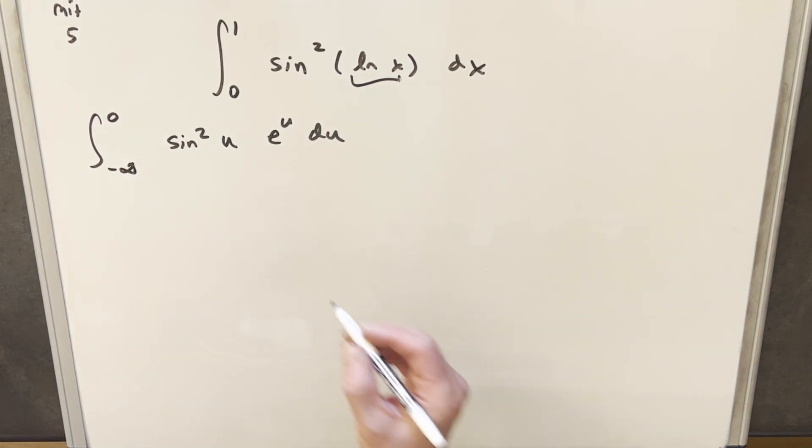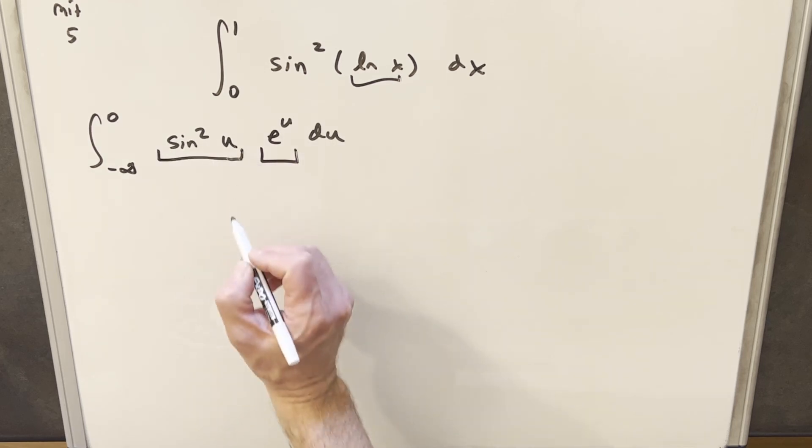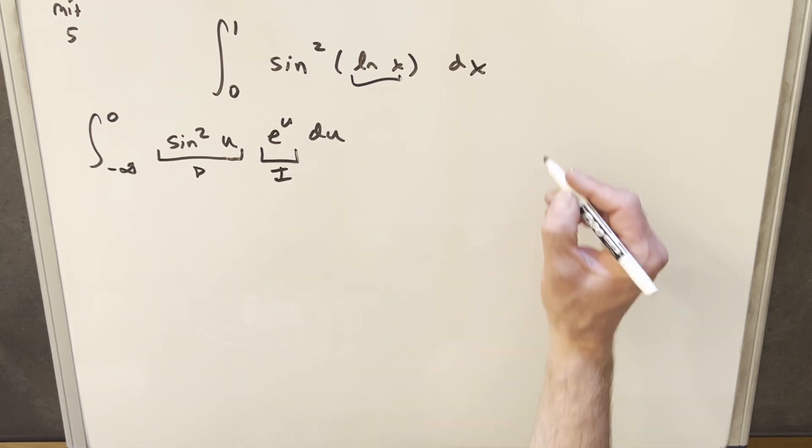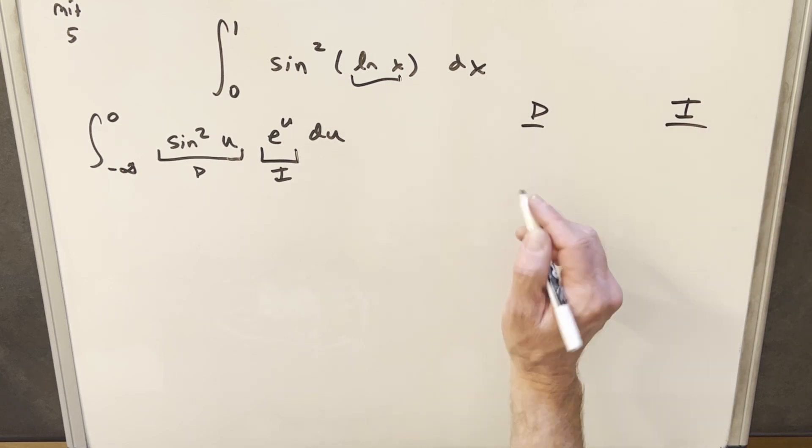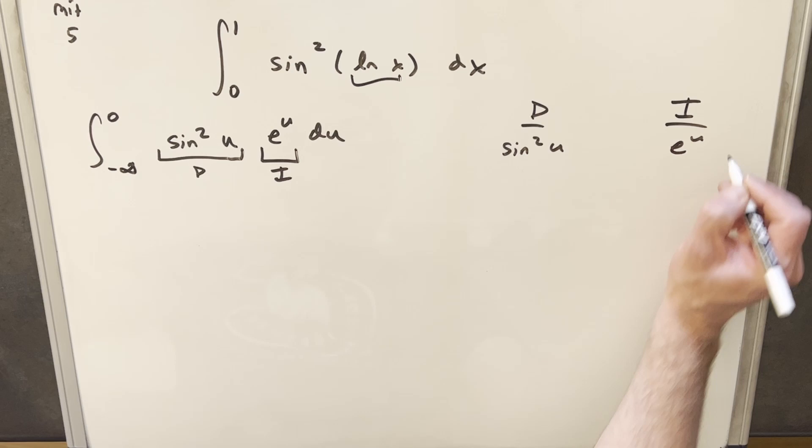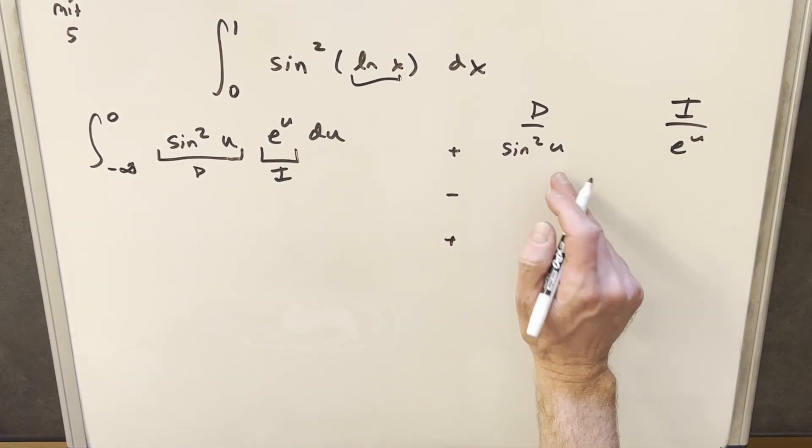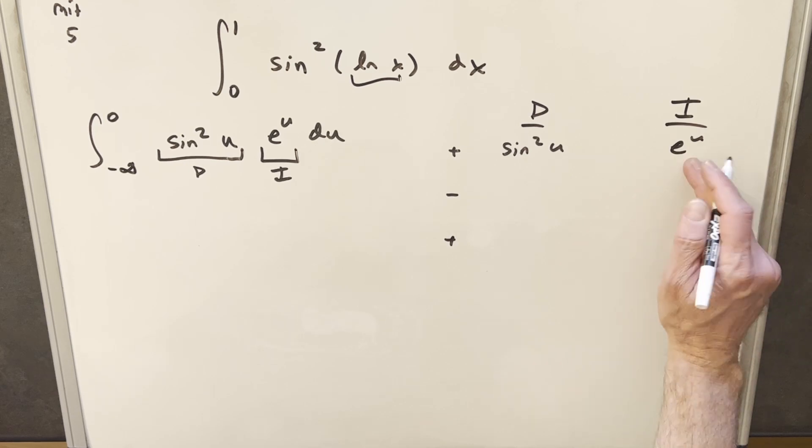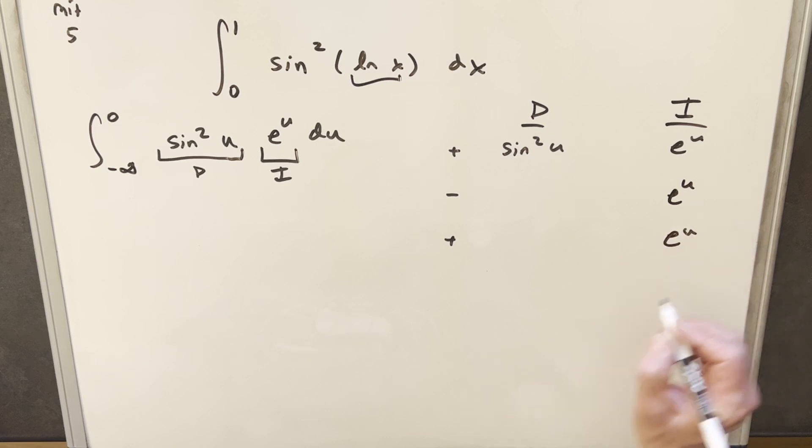I'm going to use the DI method. And I think what I'm going to do is integrate this piece and differentiate this piece. So we're going to set up our DI table or tabular integration. Differentiating sine squared u and integrating e to the u. I'm going to create a couple of rows. So integrating e to the u is just e to the u, e to the u.